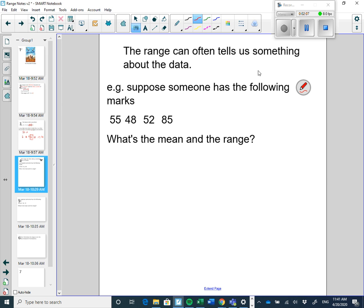The range can often tell us something about the data. Suppose someone has the following marks: 55, 48, 52, and 85. So in this case I've asked you to find the mean and the range. To find the mean make sure that you go 55 plus 48 plus 52 plus 85, and you need to make sure you hit equals. I notice that a few people on assignments may not have been doing this. You got to add them all up, then hit equals. Get 240 and then take that 240 and divide by 4. We get an average of 60.